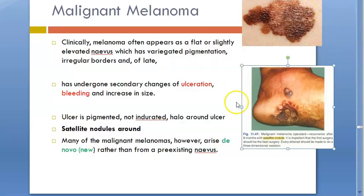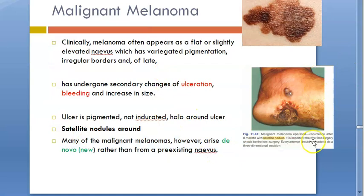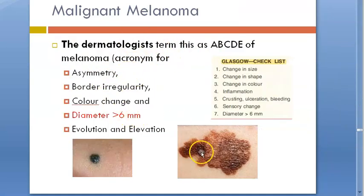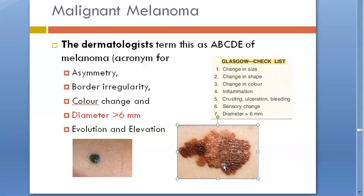Ulceration will be there. How do you differentiate it from a benign nevus? Malignant melanoma will have asymmetry — it will not be symmetrical. There is border irregularity, change in color, the diameter is greater than 6 millimeters, and it can evolve. It will change and it can elevate also. Whenever there is something changing in size, shape, color — ulcerating, bleeding, encrusting, sensory change, or the diameter is more — you should seek a doctor's help.